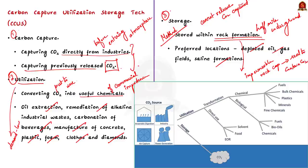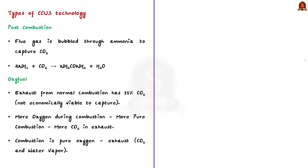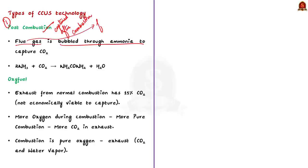Now let us see three types of CCUS technology. The first one is post-combustion. As the name suggests, carbon dioxide is captured after the combustion takes place. In this method, the flue gas or exhaust gas from coal thermal power plants is passed or bubbled through a liquid solvent like ammonia. The carbon dioxide in the flue gas will dissolve in ammonia, preventing it from reaching the atmosphere.